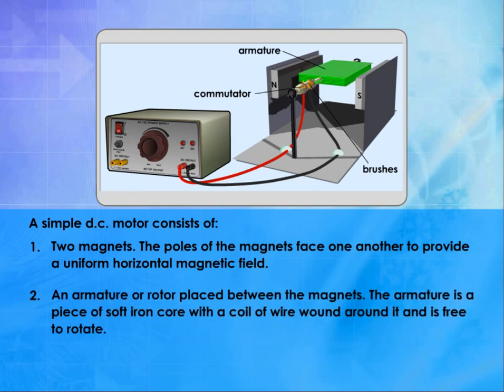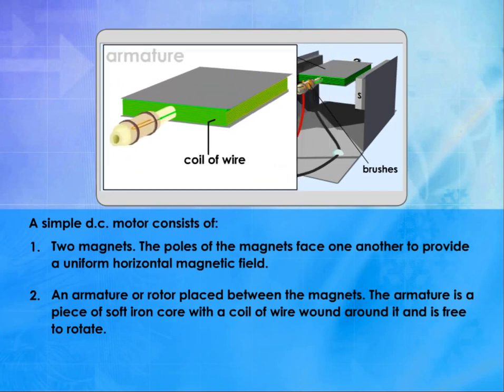2. An armature or rotor placed between the magnets. The armature is a piece of soft iron core with a coil of wire wound around it and is free to rotate.